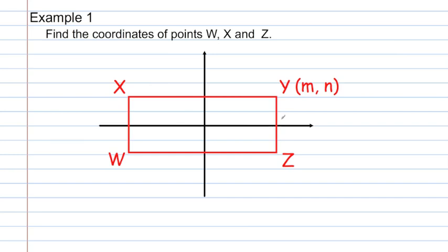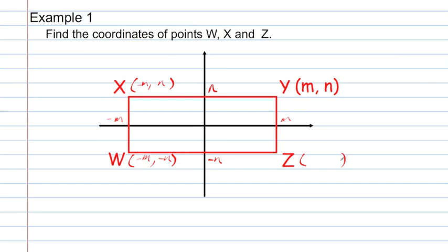Along the x-axis we've moved m units, and along the y-axis we've moved n units. The coordinates of points X, W, and Z are based on the fact that this rectangle has been placed so that all the sides are bisected. Since this is an equal distance, the coordinates are: X is (negative m, positive n), W is (negative m, negative n), and Z is (positive m, negative n).